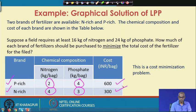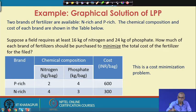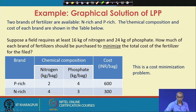We have to decide how many bags of phosphorus rich fertilizer and how many bags of nitrogen rich fertilizer to purchase, so that the total cost is minimum. The purchase must satisfy the constraints that the field requires at least 16 kg of nitrogen and 24 kg of phosphate. This is a cost minimization problem.